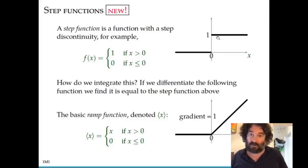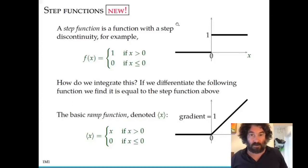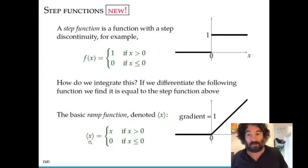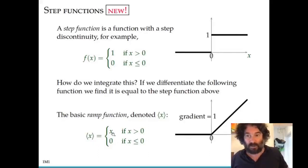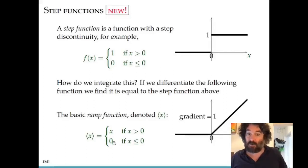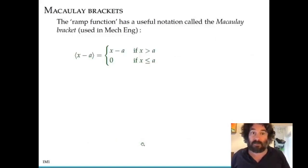Here's the graph of the ramp function, and we already see an example of the Macaulay bracket here. These pointed brackets are what we mean by Macaulay bracket. This bracket is a notation for the ramp function — it simply indicates that we have whatever is inside the bracket when it's positive, and 0 when the quantity inside the bracket X is less than or equal to 0.